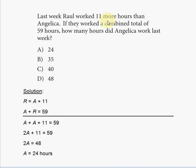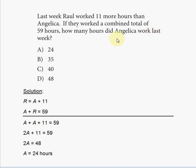Together, it says they worked a combined total of 59 hours, so A plus R is going to equal 59. You simply have to solve for A, because it asks how many hours did Angelica work last week.